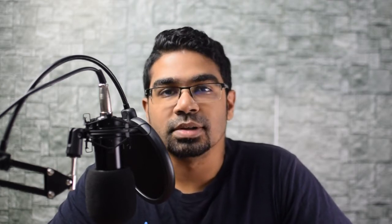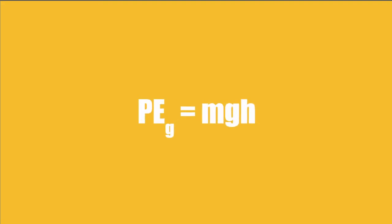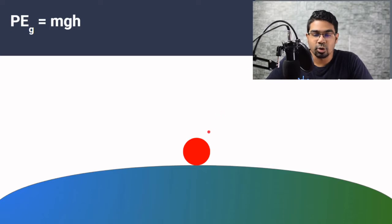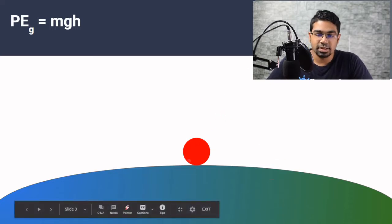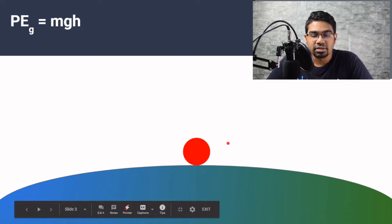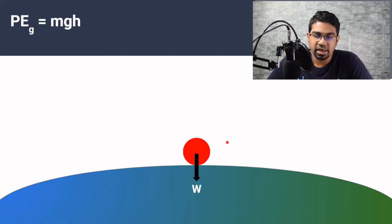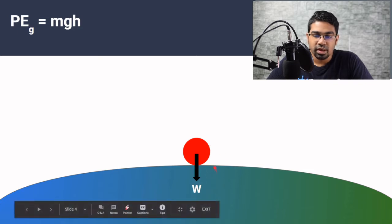When most of us are introduced to the concept of gravitational potential energy, we are first introduced to E equals mgh. Let's say there's a ball on the surface of the earth. There's a force acting on this ball — the force of gravity — which exists between the ball and the earth, acting downwards towards the center of the earth.